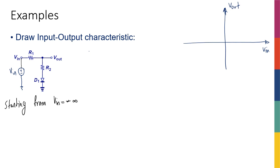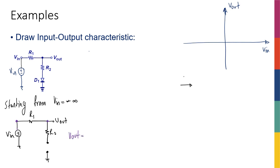Starting from negative infinity, the diode is off. With the diode off my circuit has Vin, R1, and R2, but R2 is floating with no connection to ground — there is no loop, so there is no current. No current means the voltage across R1 is zero, therefore the voltage on the other side of R1 is also Vin, so Vout equals Vin. Starting from negative infinity I have a line with slope 1, continuing until the diode turns on.